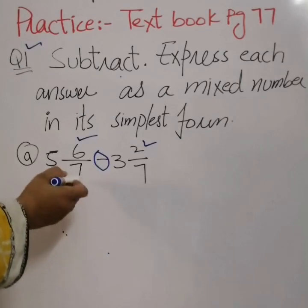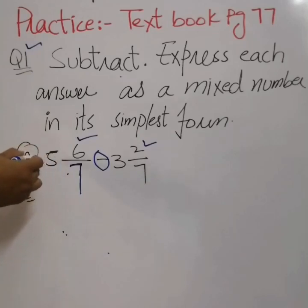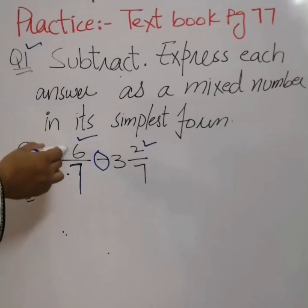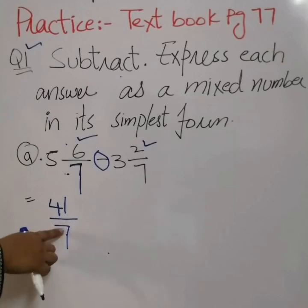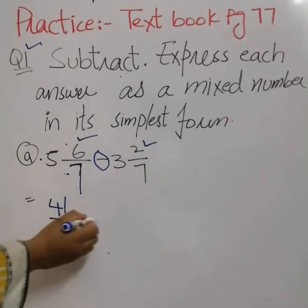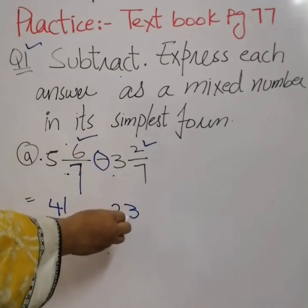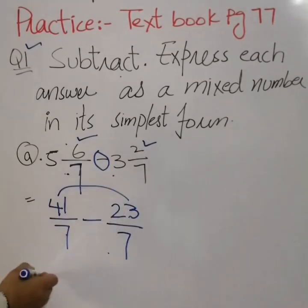Now we start. Here we have a mixed number. We convert it into an improper fraction by multiplying the denominator and the whole number, and after that adding the numerator. 7 times 5 is 35, plus 6 is 41 over 7. Then 7 times 3 is 21, plus 2 is 23 over 7. Now we have both denominators the same, so we easily subtract the numerators.